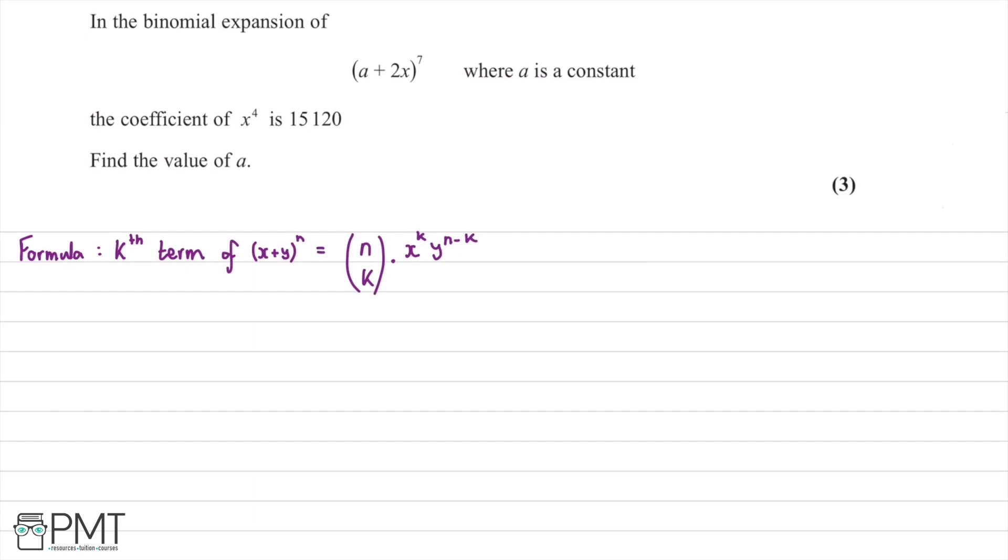In this question we're told that in the binomial expansion of (a+2x) to the power of 7, the coefficient of x to the power of 4 is equal to 15,120. We're asked to find the value of a.